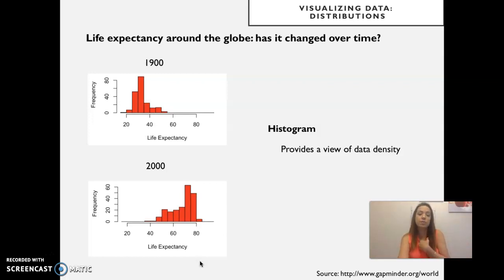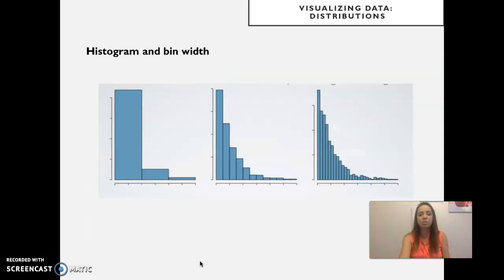The other thing that histograms helps us see is the shape of the distribution. And seeing the shape, being able to capture the shape requires some playing around with the width of the bin. If the bin is very large, we can lose some of the important details. If the bin size is very small, it gets too detailed and looks more like a broken comb. So we want some size of the bin to get a smooth distribution out of it.